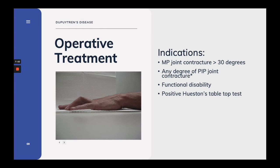So when do we operate on Dupuytren's? Surgical indications include an MCP joint contracture greater than 30 degrees. Textbooks may state that any degree of PIP joint contracture is an indication; however, this isn't a hard and fast rule — many clinicians will go by 15 or more degrees. What's more important for surgical indications is loss of function and rate of progression. Severe adduction contracture, especially within the first web space, and compression neuropathy associated with the presentation are other indications. Finally, a positive Hueston tabletop test is another indication — the patient is asked to put their hand flat on the table, and if they cannot, the test is positive.